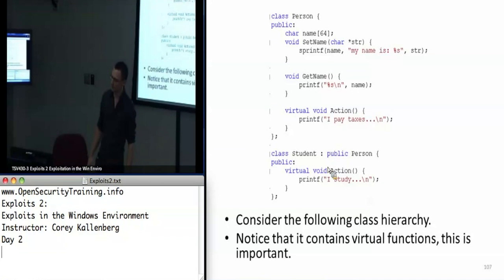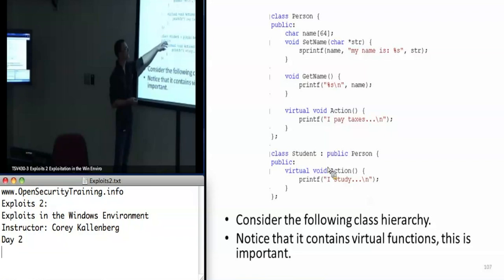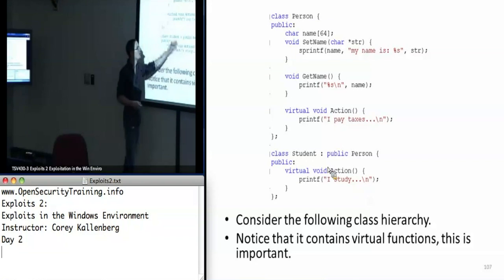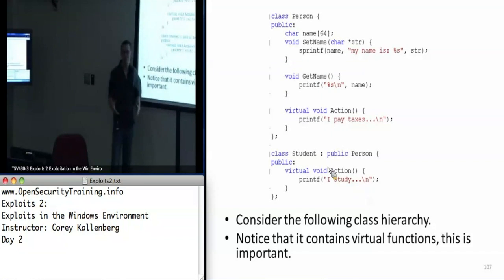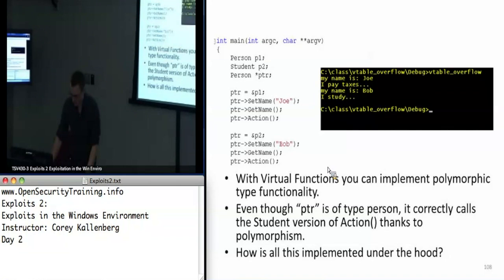You don't really need to know C++ deeply here. C++ polymorphism is where you have a person class and a student class, and C++ dynamically decides which action function to call depending on whether you're referencing the object as a student or as a person. The way that all works is by using these crazy amounts of function pointers, and I'll actually show that to you in a debugger.